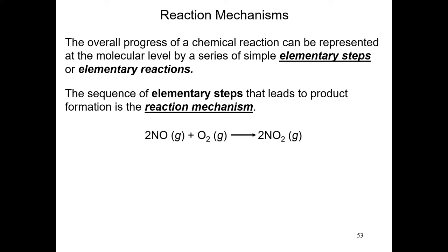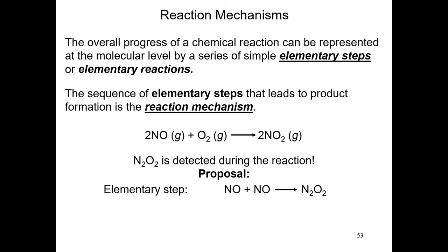Let's consider the following reaction between nitrogen monoxide and oxygen gas to produce nitrogen dioxide. Now, when we study the chemical reaction, something interesting happens. During the reaction progress, the substance N2O2 dinitrogen dioxide is detected during that reaction. And so what scientists do is they make the following proposal. They're going to say that the reaction occurs in two steps. In step number one, two molecules of nitrogen monoxide collide to produce this substance N2O2.